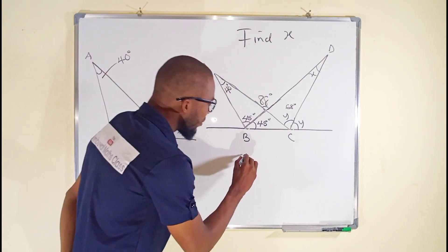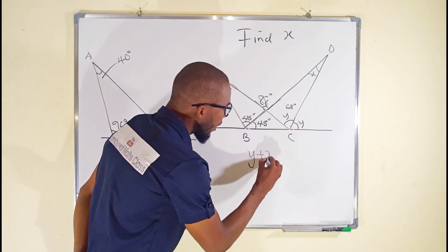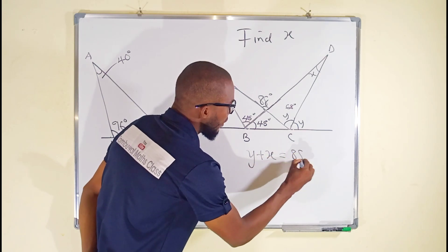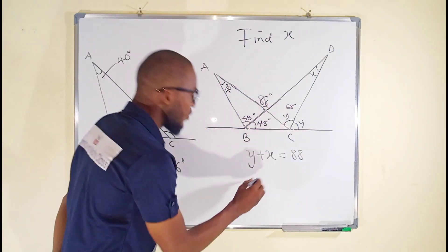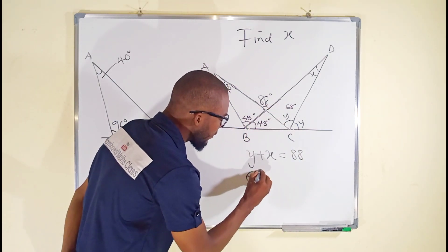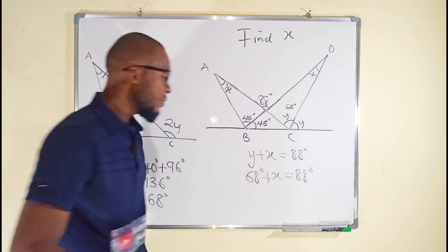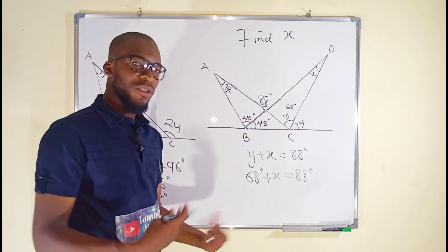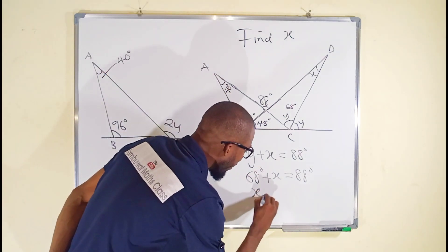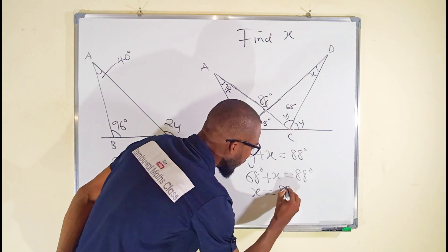This means that y plus x is equal to 88. But y has been obtained to be 68 degrees plus x, and this is equal to 88 degrees. If you take 68 to the right, it becomes negative. Finally, x is equal to 88 minus 68.